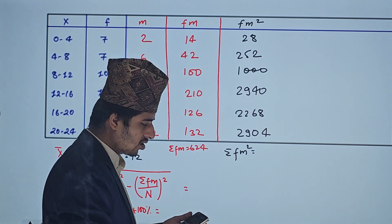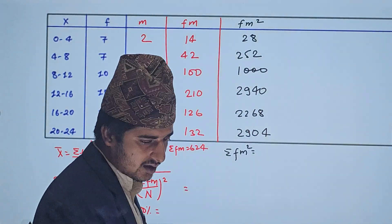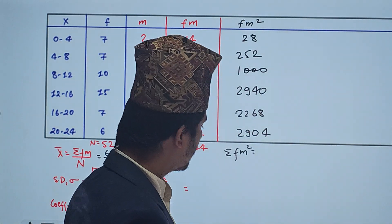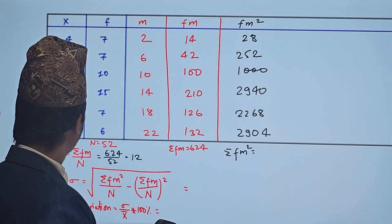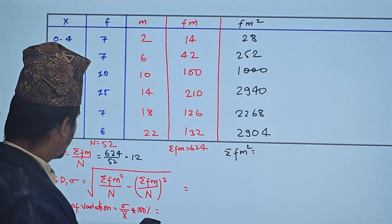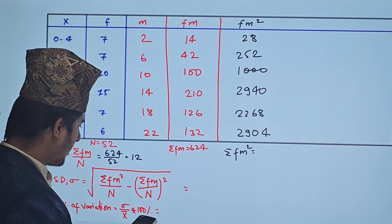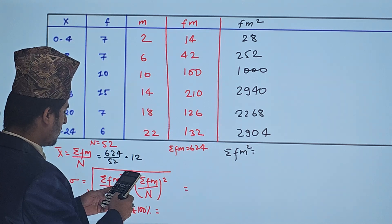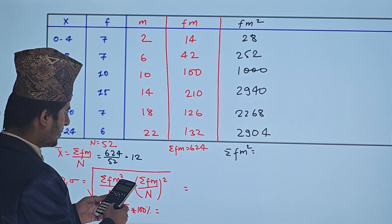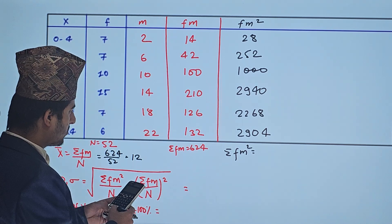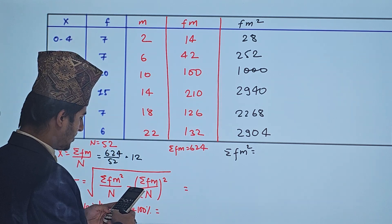Now computing f×m² values: 18×7 = 126, 18×126 = 2268, then additional products give 252 and 1000, with 2940 and 2268 contributing to summation f×m² = 2904. Then 9392 is obtained as the summation of f×m².